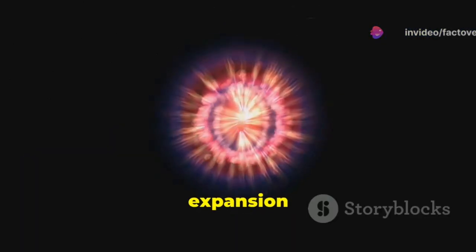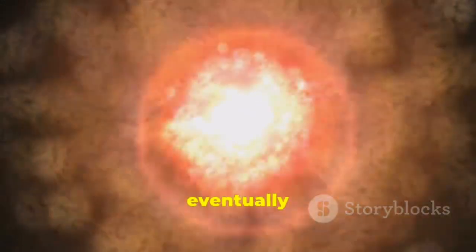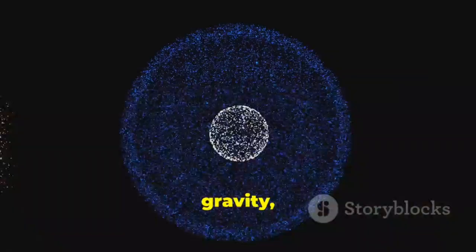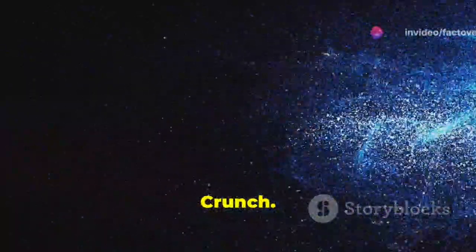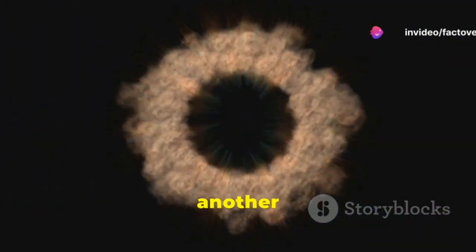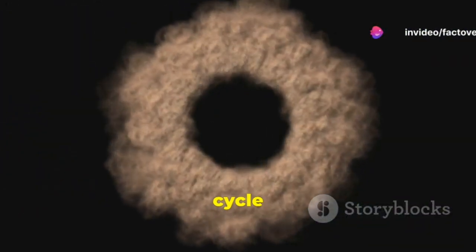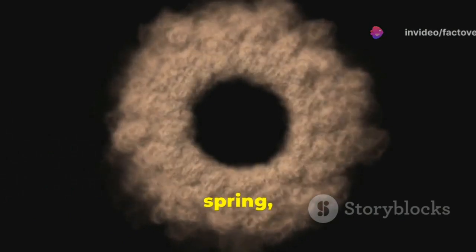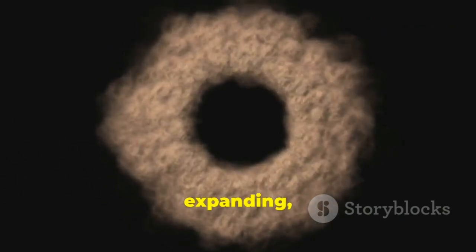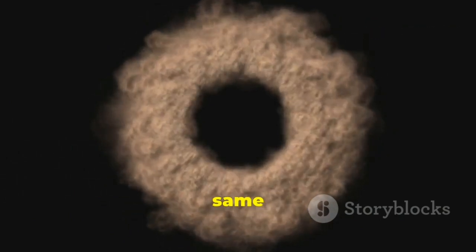Some models suggest that the expansion of the universe will eventually slow down due to gravity, eventually reversing into a contraction phase known as the Big Crunch. This crunch could then lead to another Big Bang, starting the cycle anew. Imagine a spring, compressing and expanding, endlessly repeating the same motion.